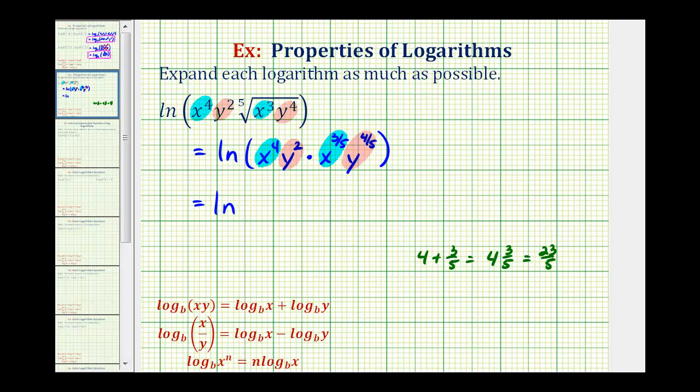So we'd have natural log of x to the twenty-three-fifths, and then we'll have y to the power of two plus four-fifths. Well, two plus four-fifths is just two and four-fifths. Convert this to an improper fraction. Five times two plus four, that's fourteen-fifths. So we have y to the fourteen-fifths.